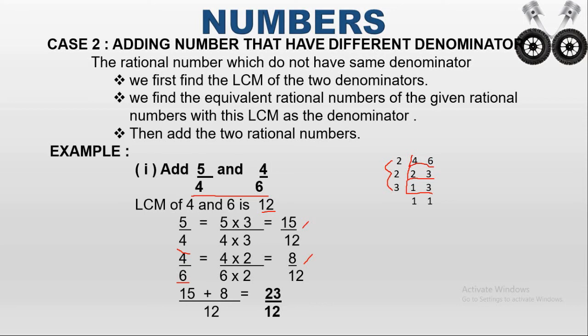Now we can add the 2 rational numbers because they both have the same denominator 12. We add the numerators: 15 + 8 = 23, giving us 23/12. So whenever we add 5/4 and 4/6, the answer is 23/12.